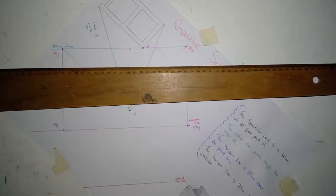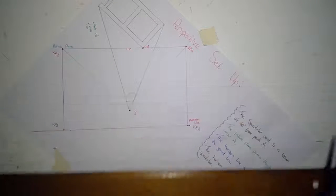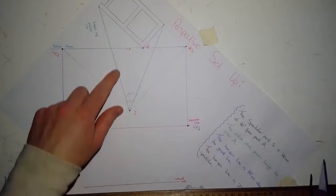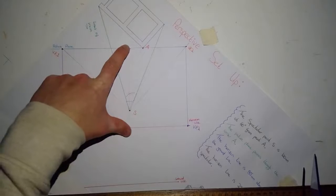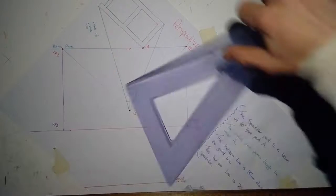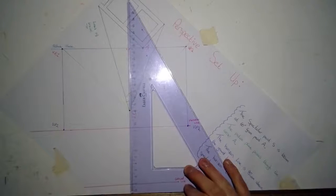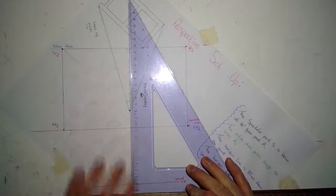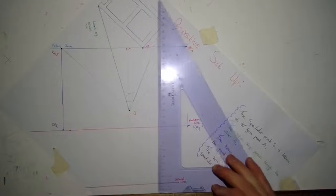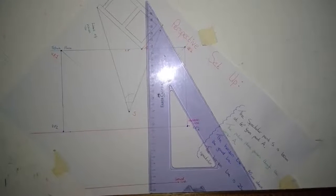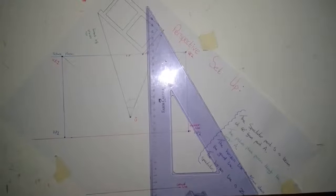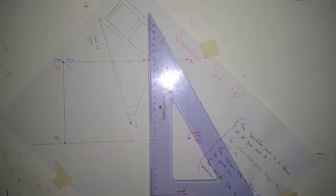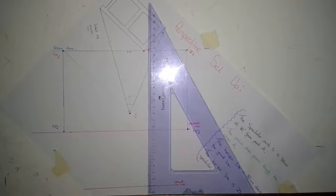What this does is speed up my task quite a bit. Instead of having to use sliding set squares to go parallel to this bisector line I created, I can now just place my set square on my t-square and it'll draw the line straight down. It's just sped up the whole process for me basically.